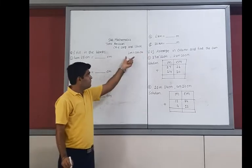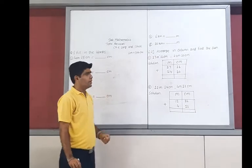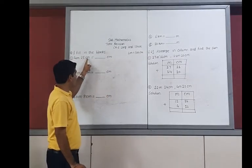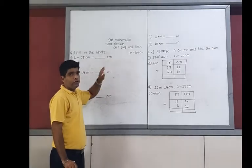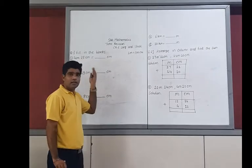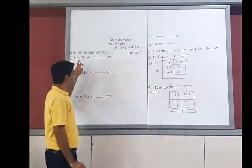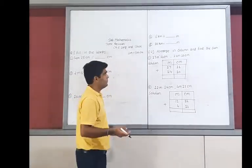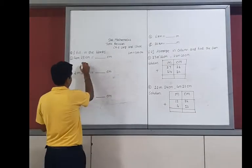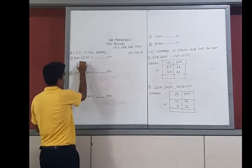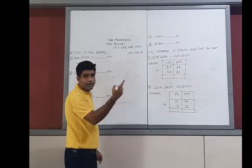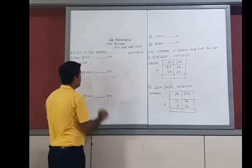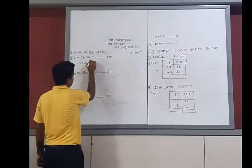1 meter equals 100 centimeters. Now we solve this example. For 4 meters 25 centimeters converted into centimeters: the 25 centimeters is already given, and we only need to convert 4 meters into centimeters. So here, 4 multiplied by 100, and then add 25.